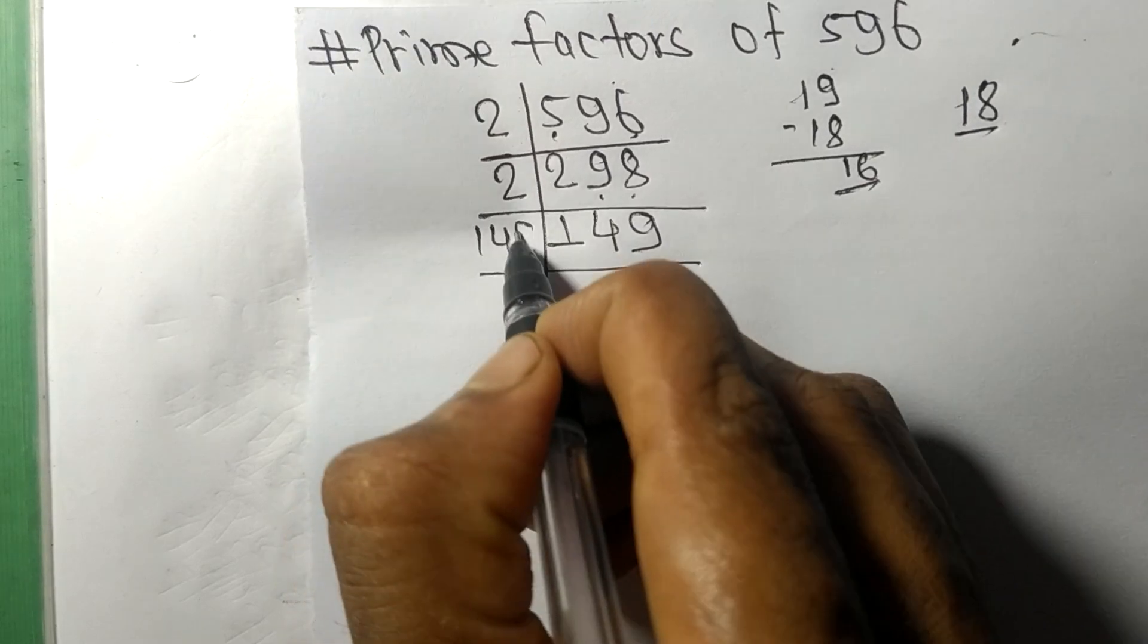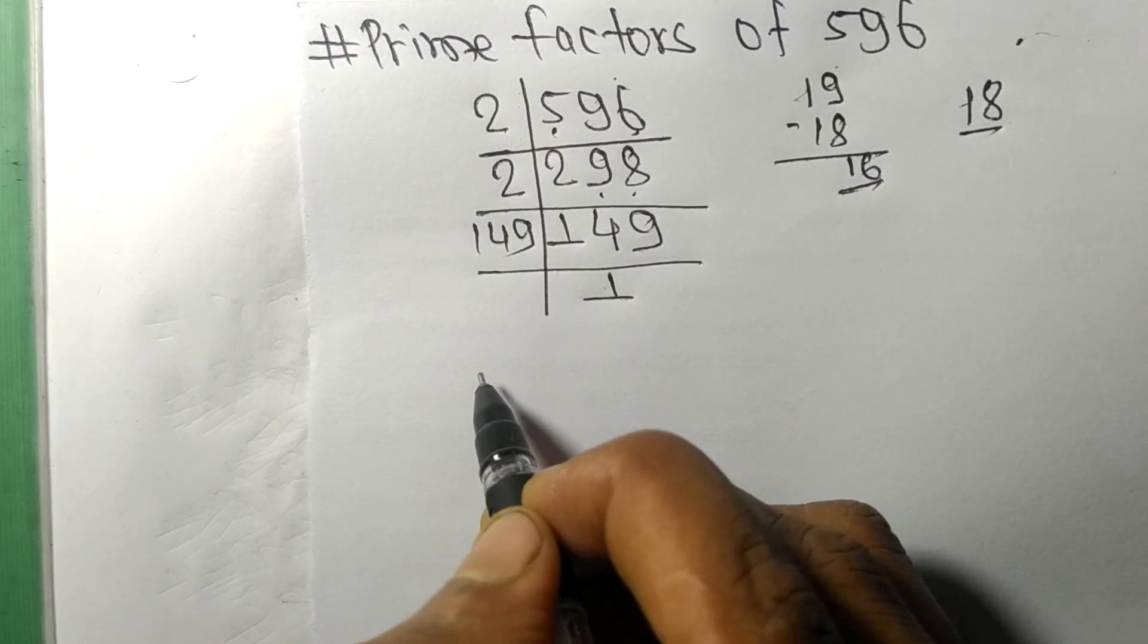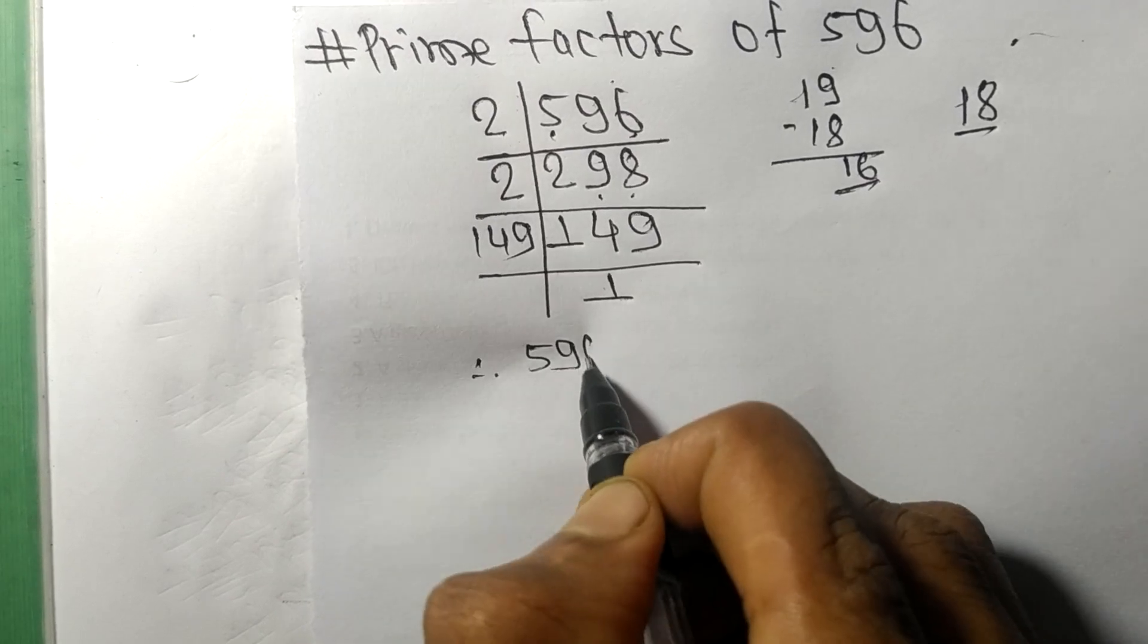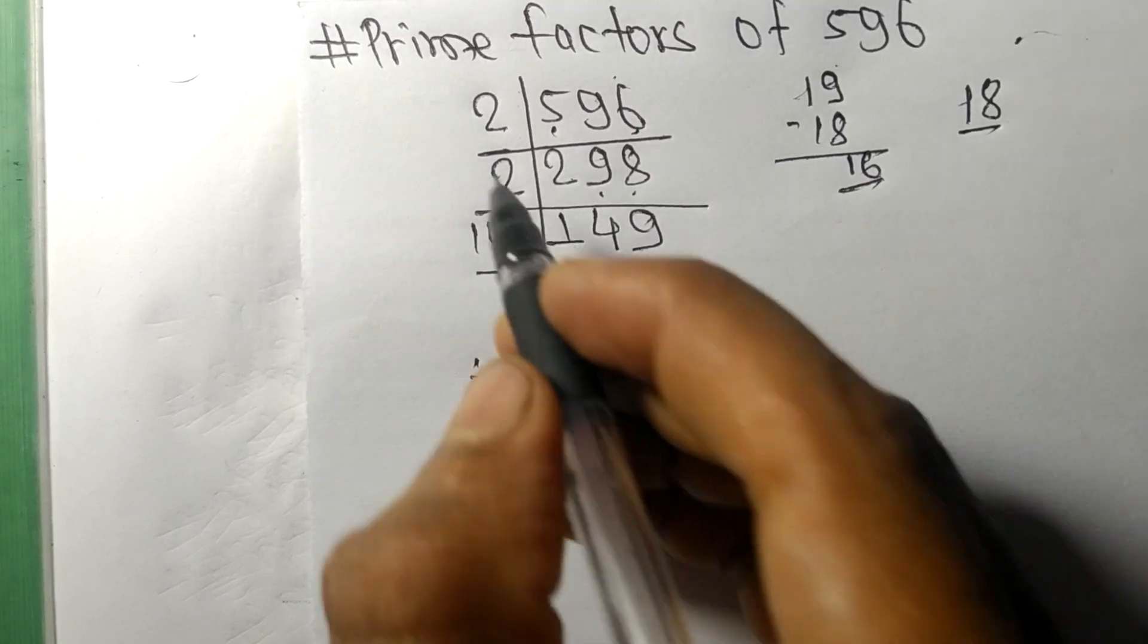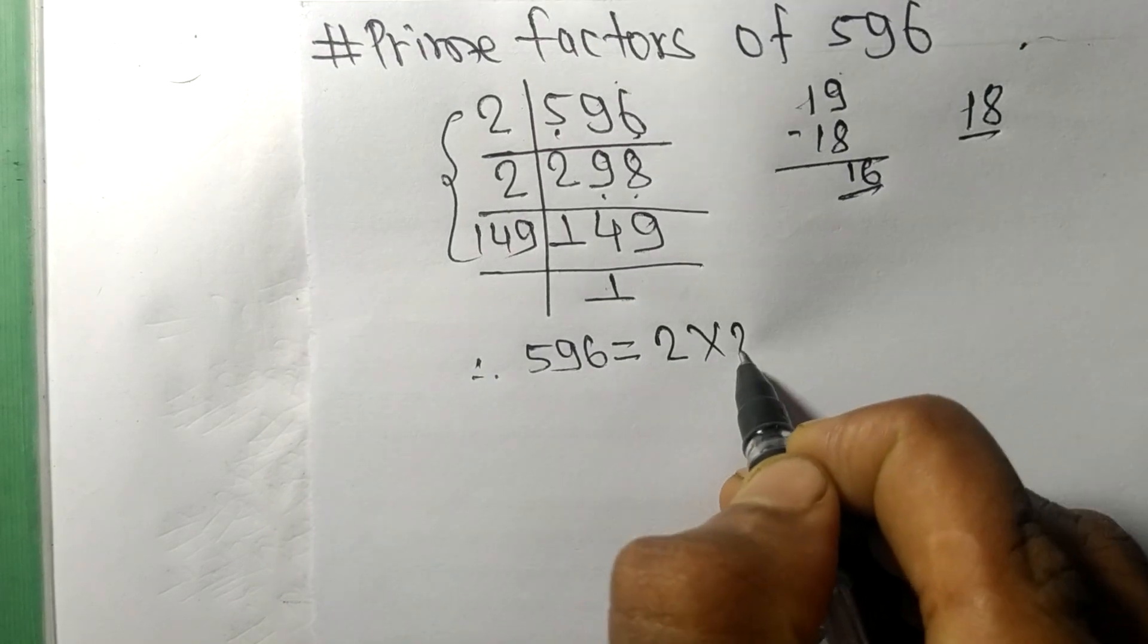149 itself and we get 1. Therefore, 596 is equal to, from this side we get 2 times 2